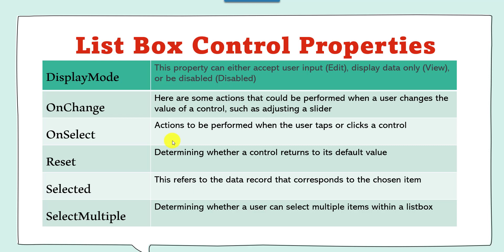OnSelect: actions to be performed when the user taps or clicks on a control. Reset: determining whether a control returns to its default value. Selected: this refers to the data record that corresponds to the chosen item. And Select Multiple: determining whether a user can select multiple items within a ListBox.